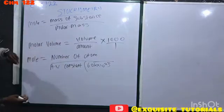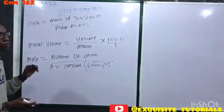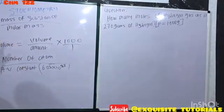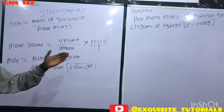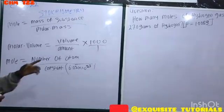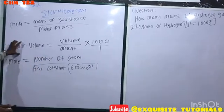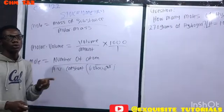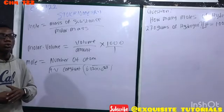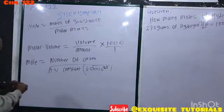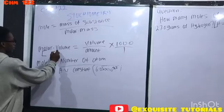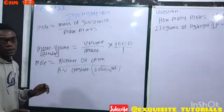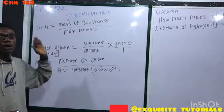These formulas are the basic formulas to solve your stoichiometry. I didn't state this—molar volume has a constant at standard temperature and pressure (STP). This molar volume constant is 22.4 dm³ at STP, which is 760 mm Hg and 273 K.